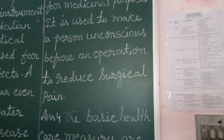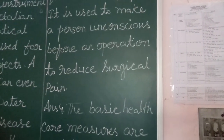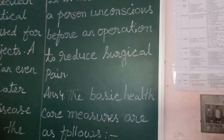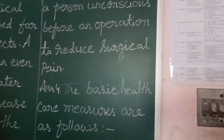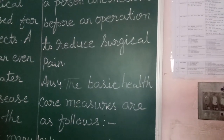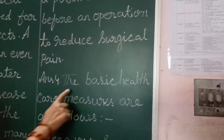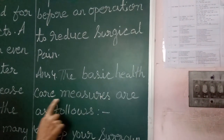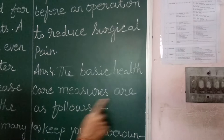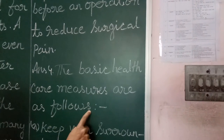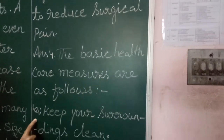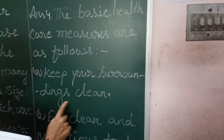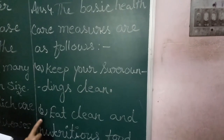Question number 4: What are the basic health care measures? Answer: The basic health care measures are as follows. Number 1: Keep your surroundings clean.